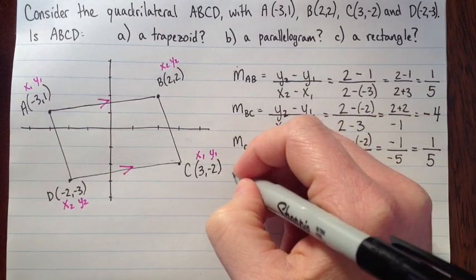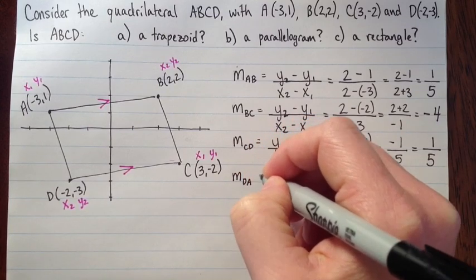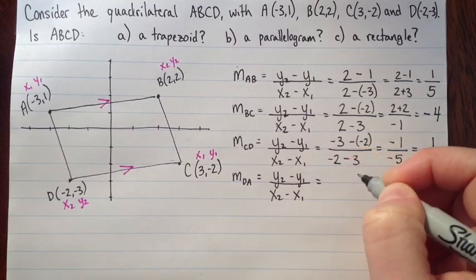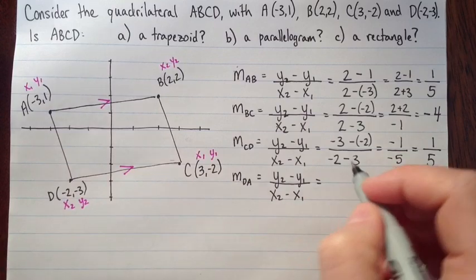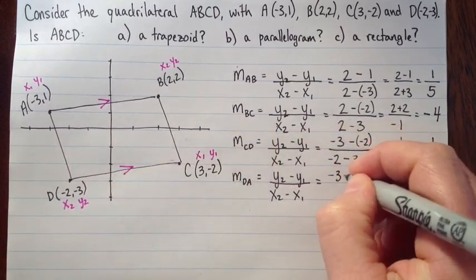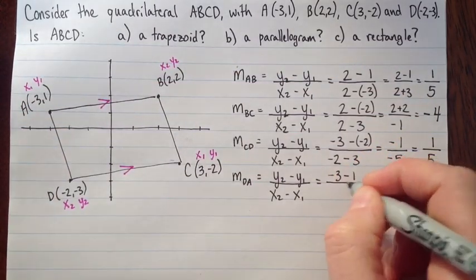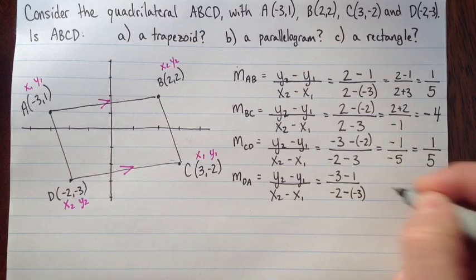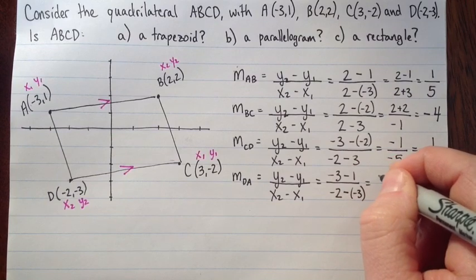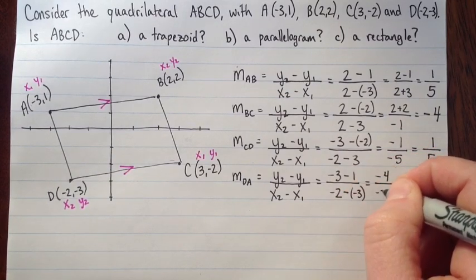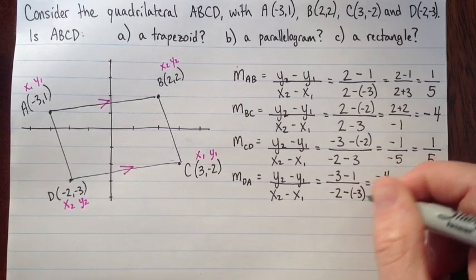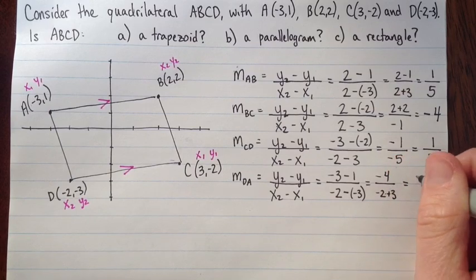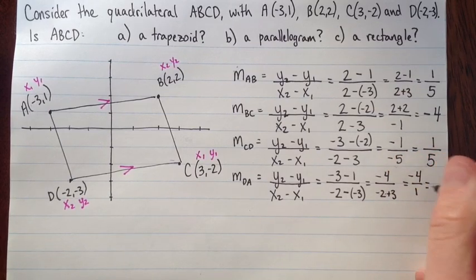We've got one last one to do, AD. That's y2 minus y1 over x2 minus x1. Y2 is negative 3 subtract 1 over negative 2 subtract negative 3. That is negative 3 subtract 1, that's negative 4, over negative 2 plus 3, which is 1. So negative 4 divided by 1 is negative 4.